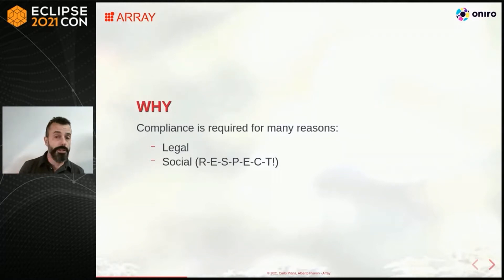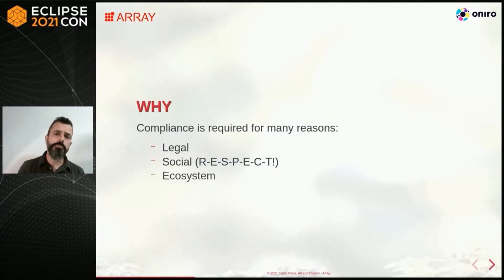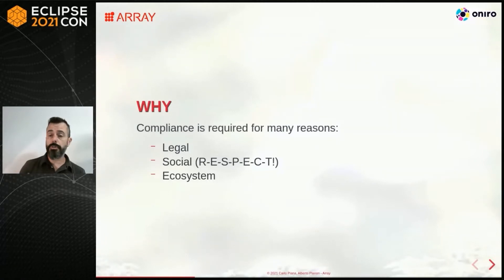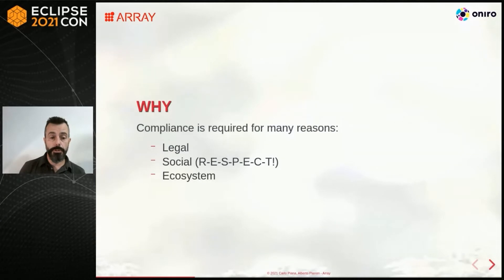The third and most important aspect in a business environment is the ecosystem. You want your software to pass the threshold from hobby to professional. Then you must take care of those who are going to implement it downstream, so you want to be writing good software — secure, well-documented — and creating the least legal friction as possible.